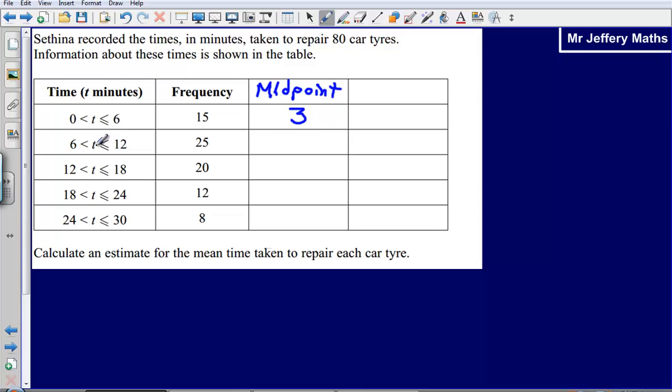So let's find the midpoint for this one. Our midpoint is going to be 9, then 15, then 21, and then halfway between 24 and 30 is 27. So we've found these halfway points in each of our groups.